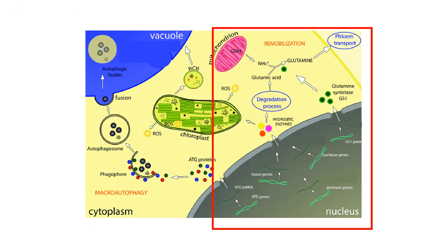In addition to autophagosome formation, several hydrolytic enzymes like proteases, lipases, nucleases and glutamine synthase genes are expressed during senescence. These are involved in hydrolysis of proteins, lipids and nucleic acids in senescing cells. Mitochondrial glutamate dehydrogenase activity also plays a role in remobilizing nitrogen by providing ammonium, which is required for glutamine synthesis from glutamic acid by glutamine synthase. These hydrolytic products and glutamine are then remobilized via phloem to other sink tissues in the plant.